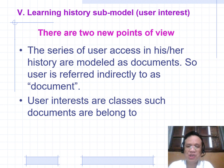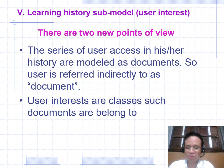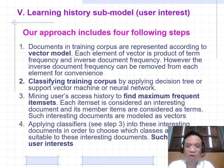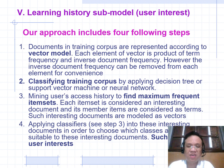Finding Learning History Submodel — User Interest. There are two new points of view. The series of items a user accessed in their history are modeled as documents, so the user is referred integrally to a document. User interests are inferred from such documents. Documents are represented according to the vector model; each element of the vector is a product of term frequency and inverse document frequency (TF-IDF), though the IDF component can be removed for convenience. Classification is performed using a decision tree, support vector machine (SVM), or neural network.